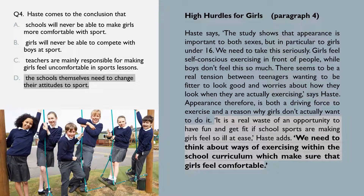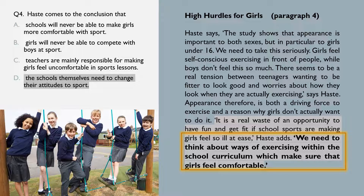Question four: we need to identify what conclusion the psychologist comes to. She says we need to think about ways of exercising within the school curriculum that make sure girls feel comfortable. This matches option D, as both express what needs to happen and are talking about changes made within the school system. Option A is wrong because the writer never says the problem is unsolvable. Option B is not really connected to the topic — the writer is concerned with girls' attitude to sport and doesn't comment on girls and boys competing against each other. And although the writer says schools need to deal with the issue, nowhere in the text does she blame the teachers.